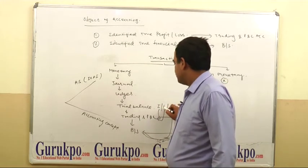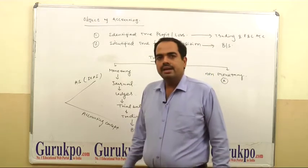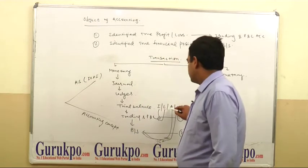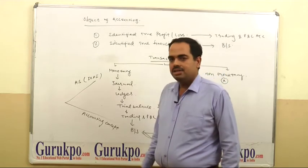The balance of income and expenses is to be transferred in trading and P&L account. And balance of assets and liabilities is to be transferred in balance sheet.